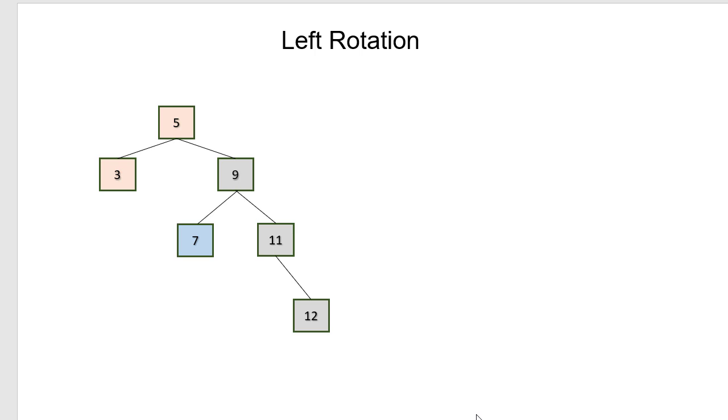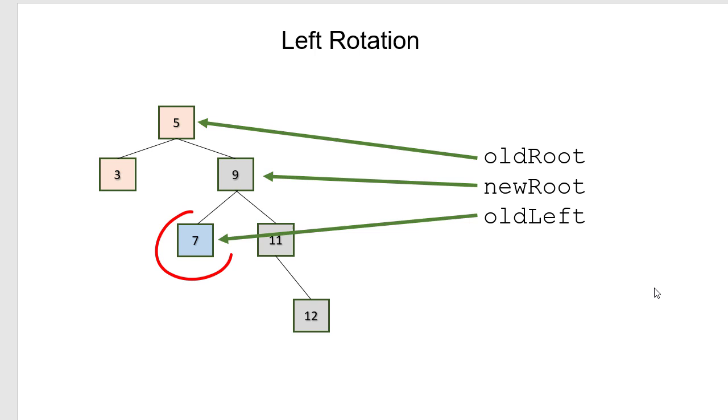So another kind of rotation is a left rotation. And the concept there is very similar. And since you've already seen the right rotation, and this is similar just in the opposite direction, we'll use some pseudocode to walk through what's going on at each step. The three nodes we're going to be concerned with are the old root and its right subtree, the new root and its left subtree. We'll call that old left.